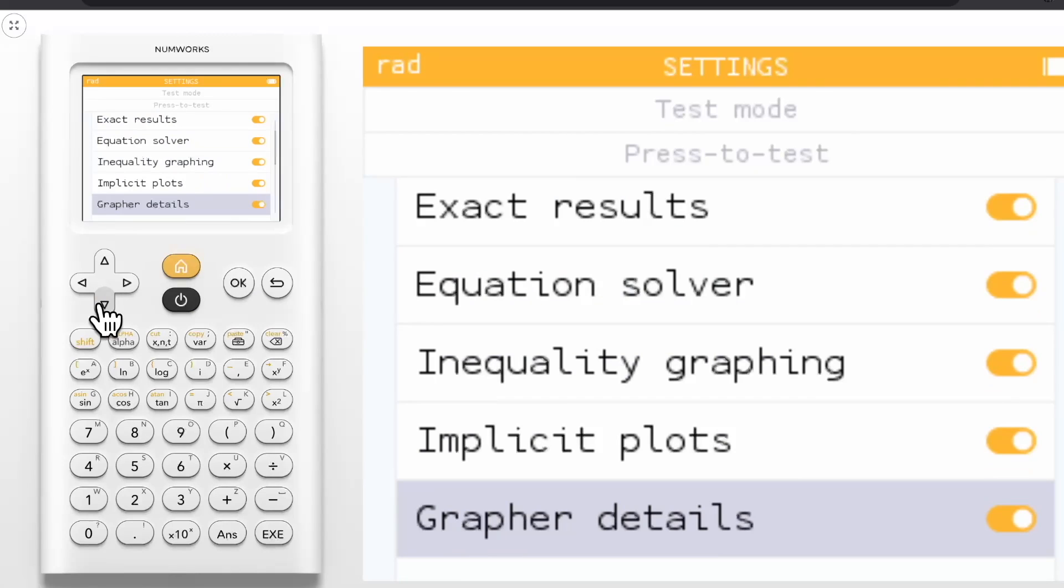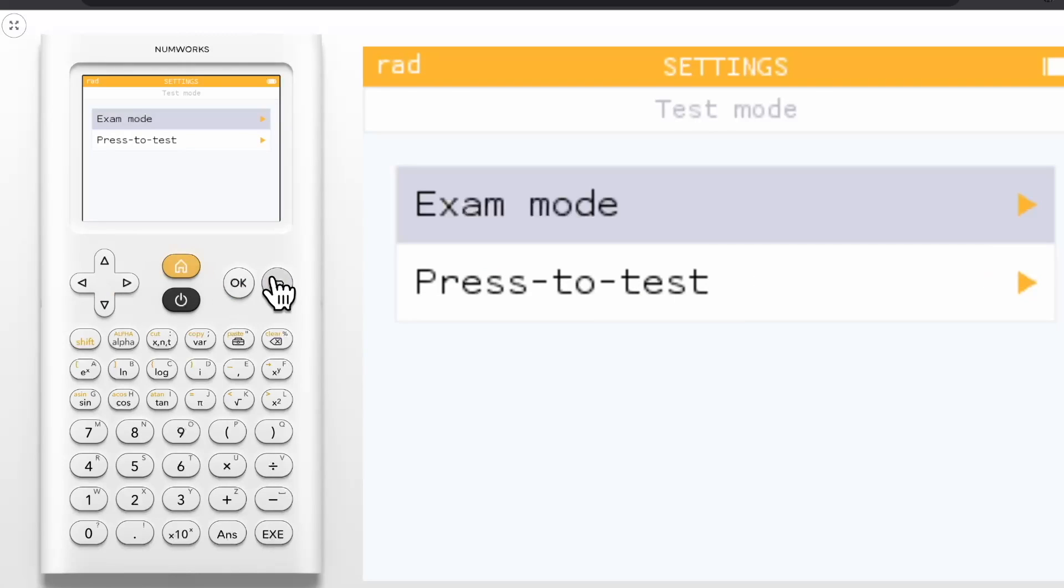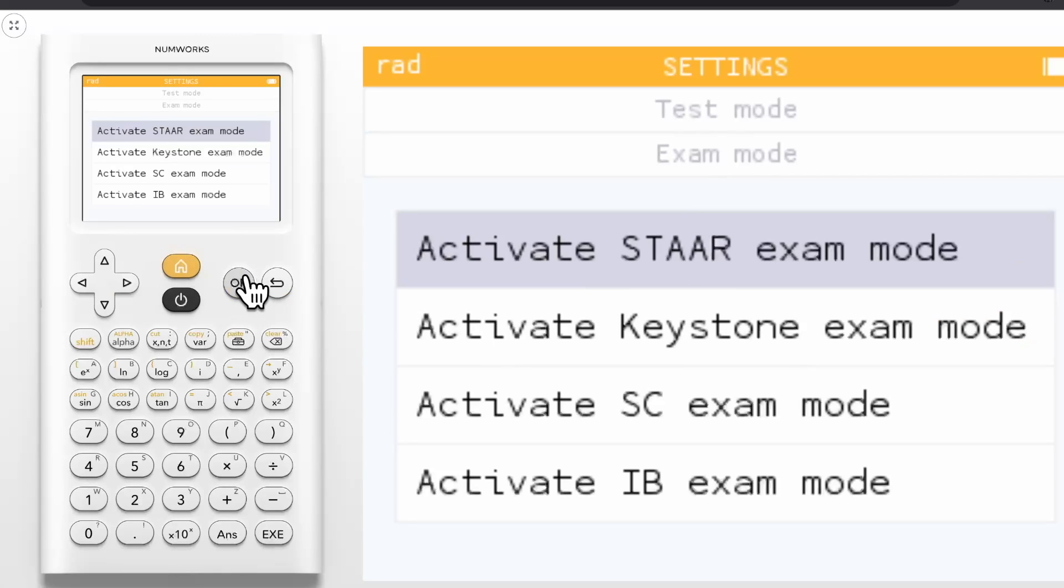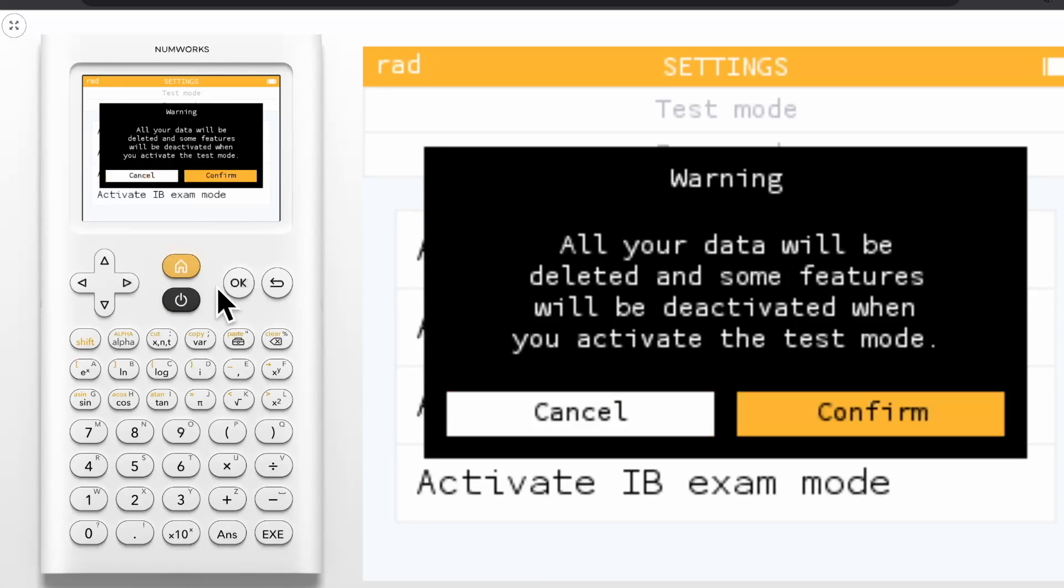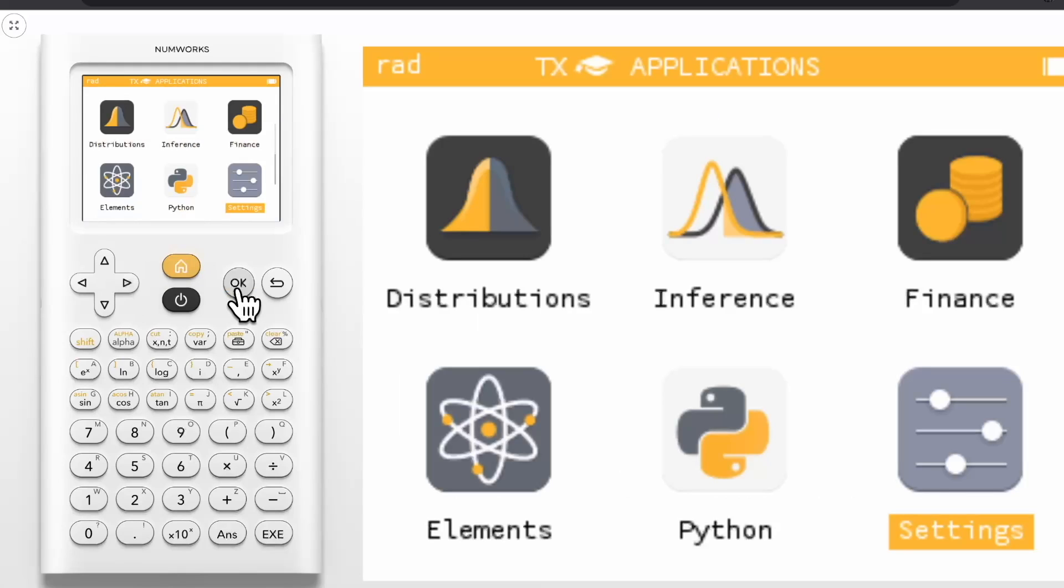And last but not least, let's back out and look at the exam modes we now offer. Here in this section, we worked closely with some exam boards to develop exam modes for their exams. Here you can see modes for the STAR exam in Texas, Keystone for Pennsylvania, SC for South Carolina, and IB for the IB exam. Once activated, the top banner will display a graduation cap as well as an identifier for the exam. For example, the STAR exam mode will have a TX and a graduation cap in the top banner. As a reminder, the only way to get the handheld out of exam mode is to connect it to a computer.